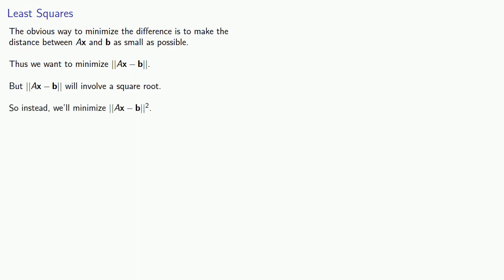So instead, we'll minimize the square of the norm Ax minus b. And since the norm of Ax minus b squared will be the sum of the squares of the components of Ax minus b, and we want to minimize the sum, we say that this is the least squares problem.